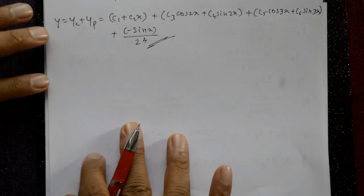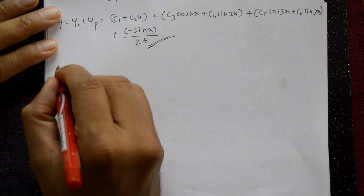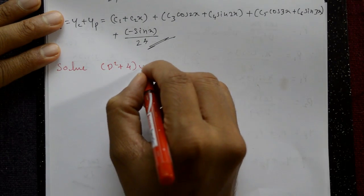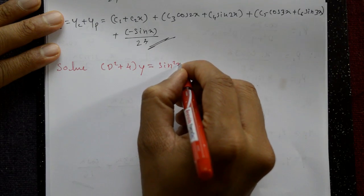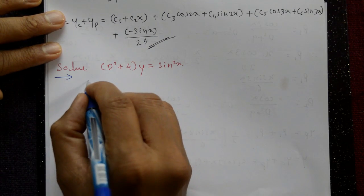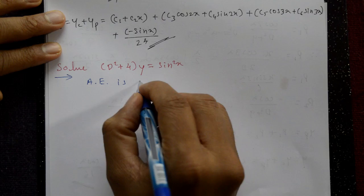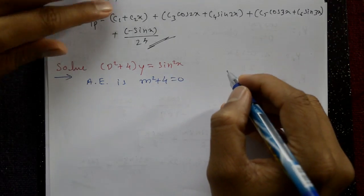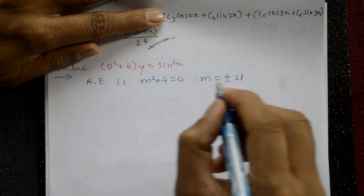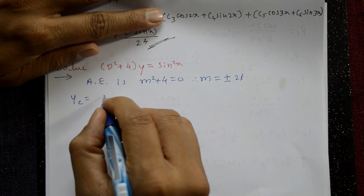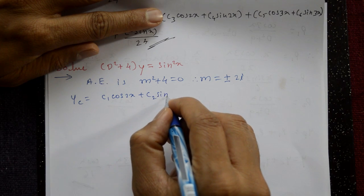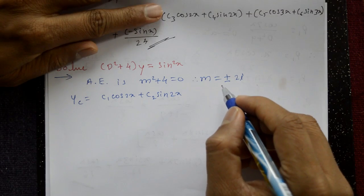Next example: Solve D-squared plus 4 into y equal to sin-squared(x). First, write the auxiliary equation: m-squared plus 4 equal to 0, so m equal to plus or minus 2i. The complementary function for complex roots is: c1·cos(2x) plus c2·sin(2x). You can also use a calculator to find the roots.